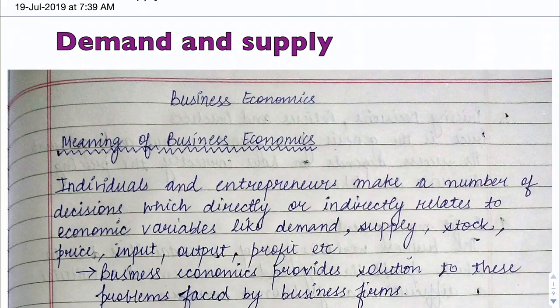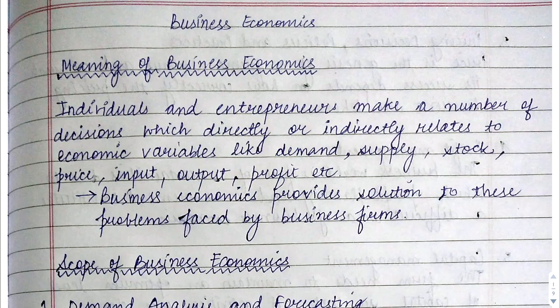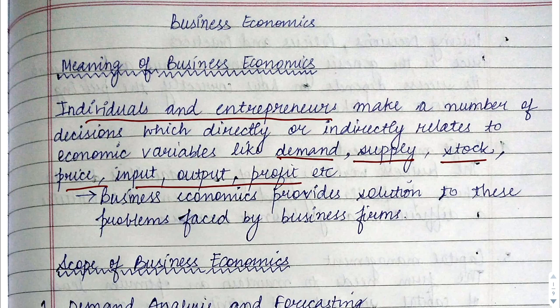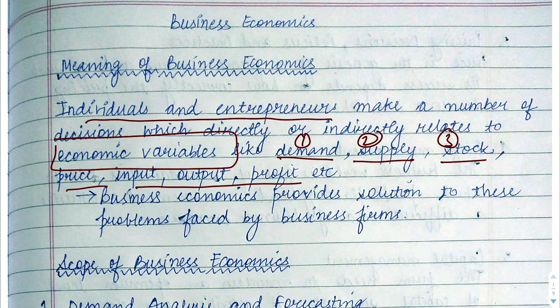After that we will come to our main topic: demand and supply. Before we understand business economics, we have to understand that any individual or entrepreneur takes decisions related to demand, supply, stock price, input-output, and profit. When problems arise from those economic variables, the solution is provided by business economics.